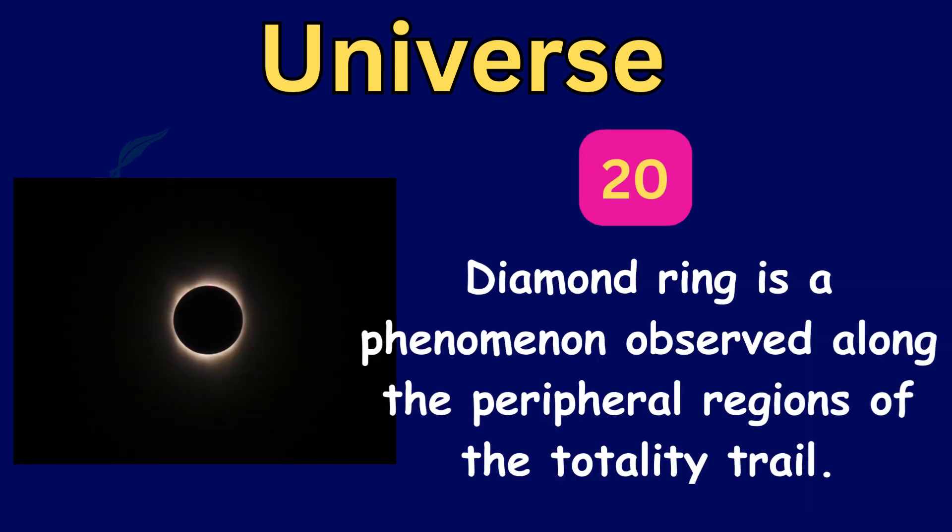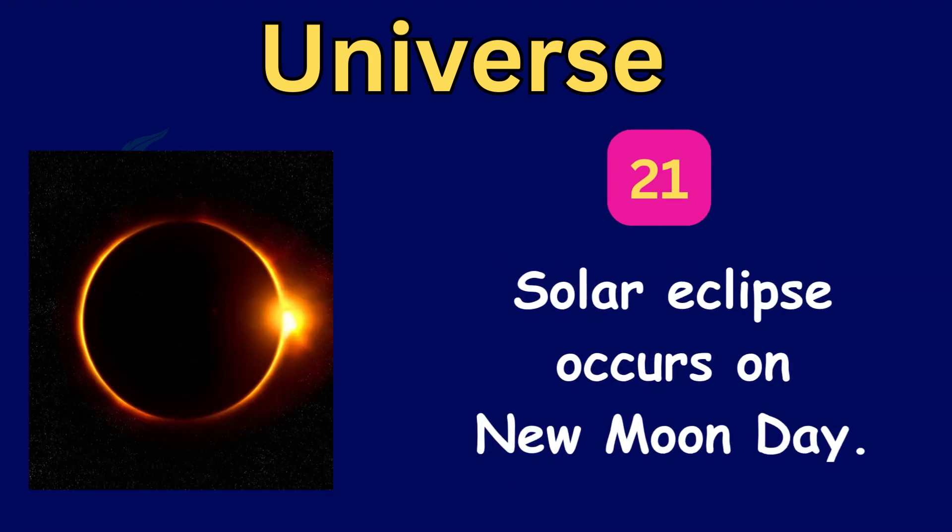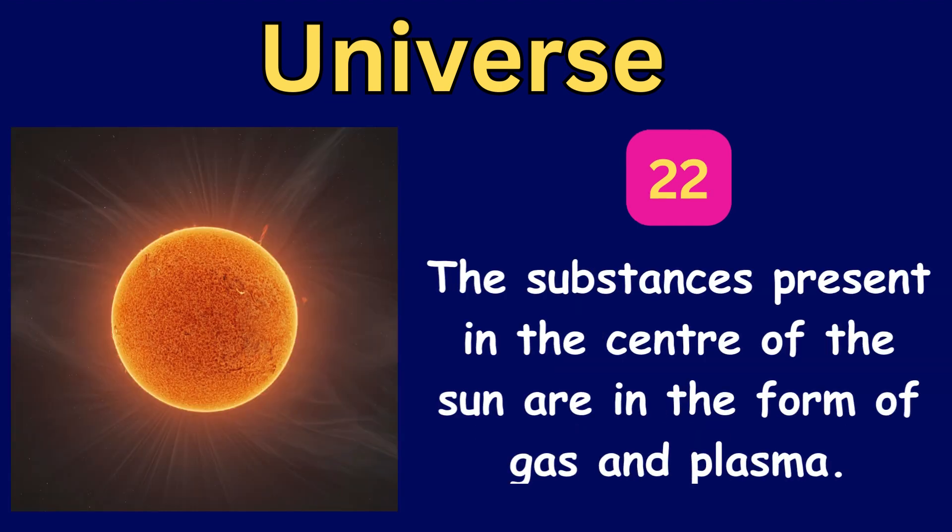Diamond ring is a phenomenon observed along the peripheral regions of the totality trail. Solar eclipse occurs on New Moon Day. The substances present in the centre of the Sun are in the form of gas and plasma.